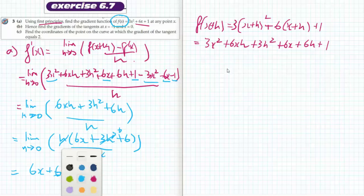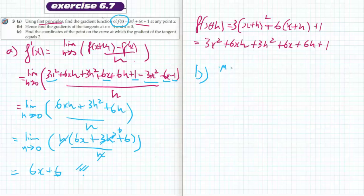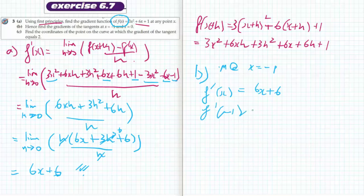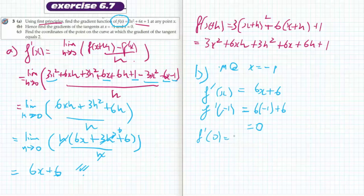Part B says: hence find the gradient of the tangent at x equals negative 1 and x equals 0. The gradient function equals 6x plus 6. When x equals negative 1, that gives 6 times negative 1 plus 6, which equals 0. When x equals 0, f dash of 0 equals 6 times 0 plus 6, which equals 6.